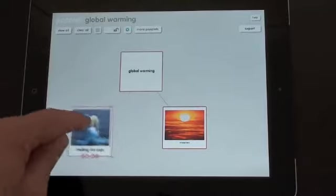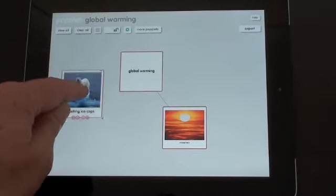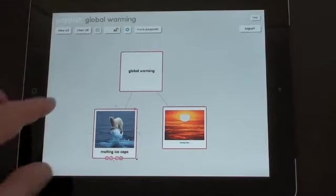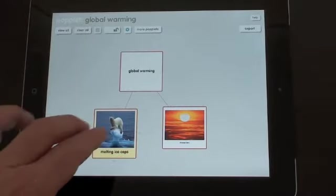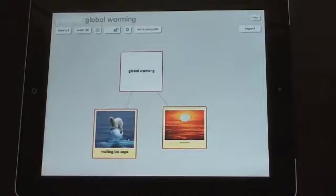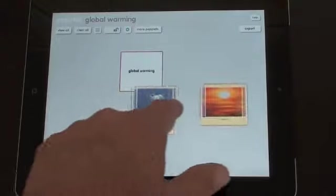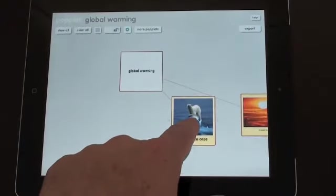Another option. Instead of moving the Poplets one at a time, you can actually highlight multiple Poplets and move them together. So for example, let's move these two diagrams. So you use two fingers and tap on the Poplet. And now with one finger, I move the two at once. So I can reposition those wherever I like.